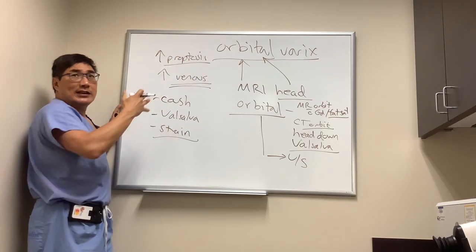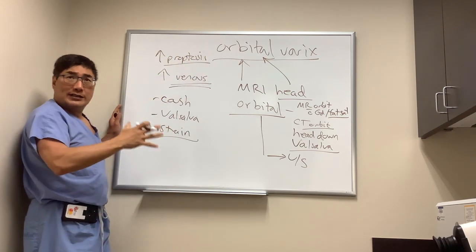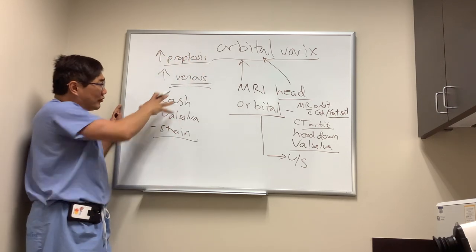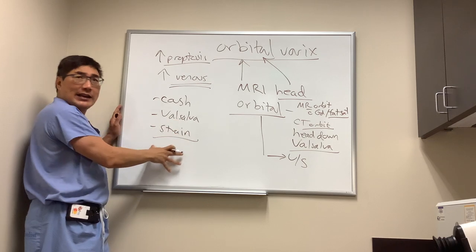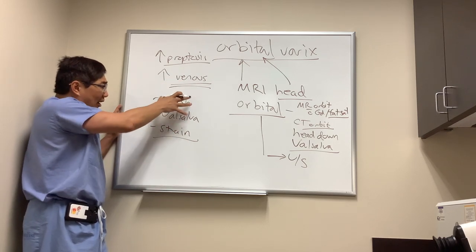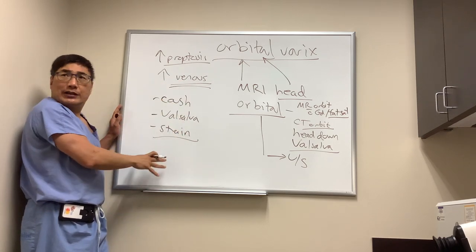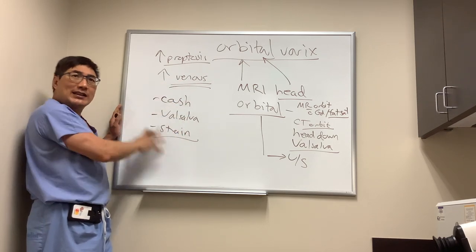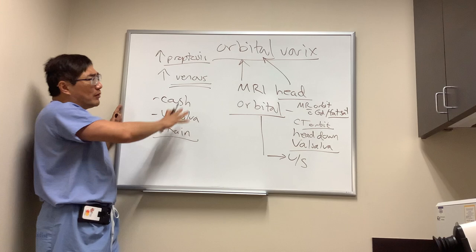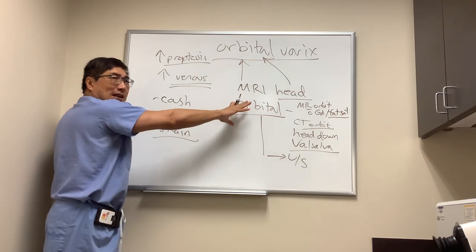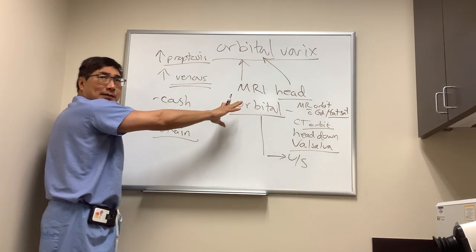Sometimes patients may have transient diplopia or transient vision loss created by increased venous return from cough, Valsalva, or straining. So when you hear that symptom, we really want to be imaging the orbit.